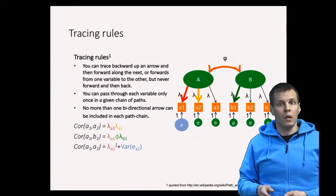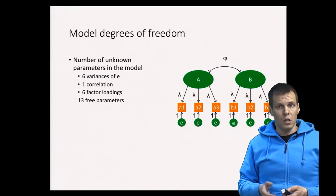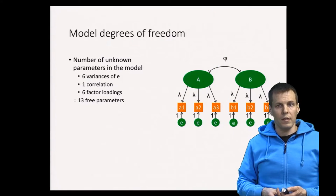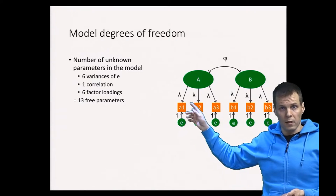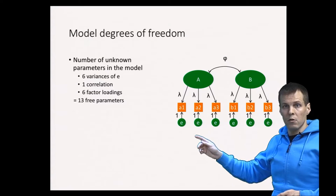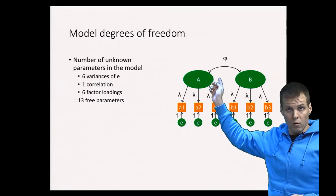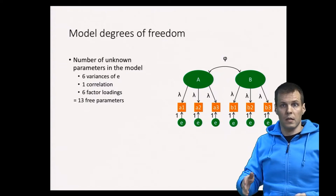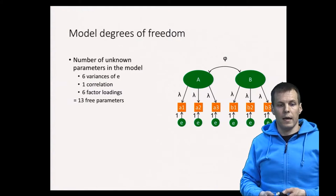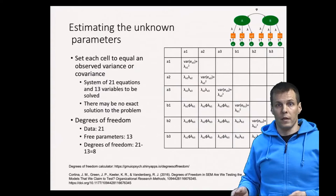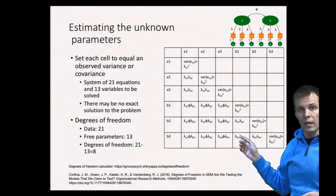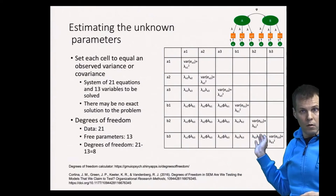Here we have a positive degree of freedom, so we are estimating altogether 13 different things from the data. We have six factor loadings, six error terms, and one correlation. Six plus six plus one is 13.